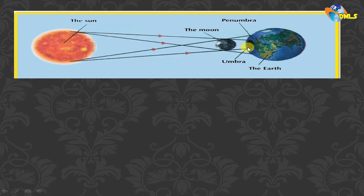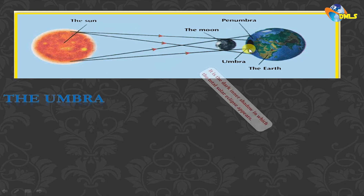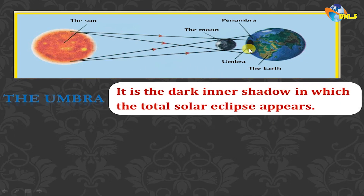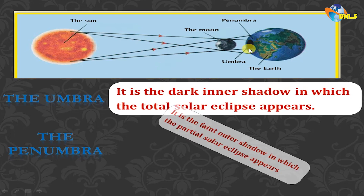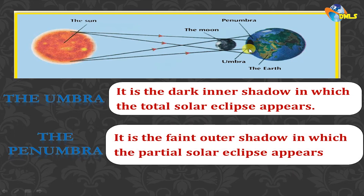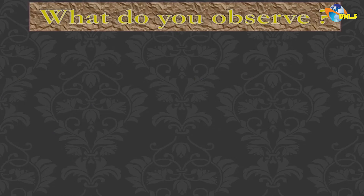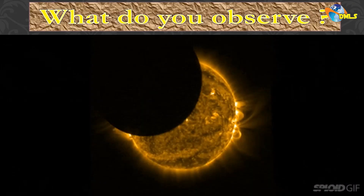When the moon is near to the Earth, it forms the umbra here. When the moon is far away from the Earth, it forms the antumbra at the end. So the umbra is the dark inner shadow, and the penumbra is the faint outer shadow.